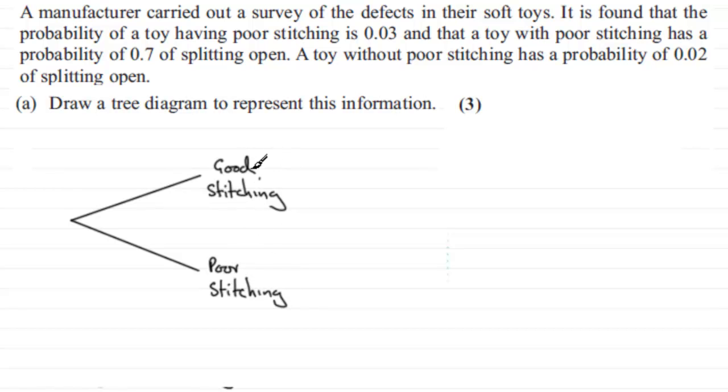And then, dependent on the type of stitching we've got, we're told that the toy may split open, or it might not. So again, we've got two outcomes here. So for each of these outcomes, let's just put in those two, something like that.